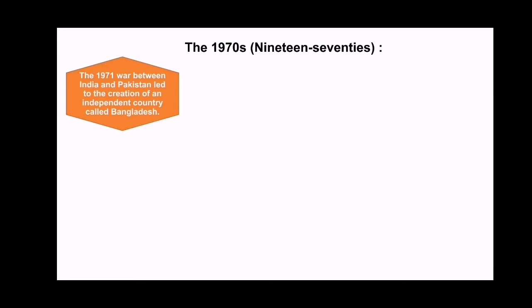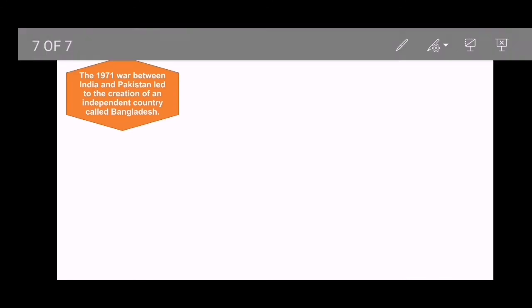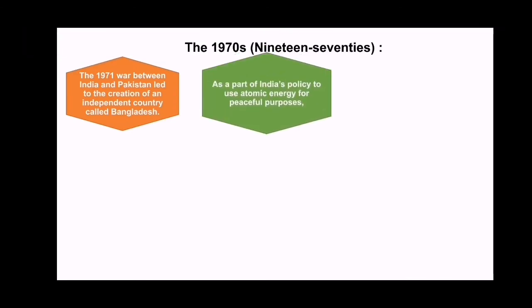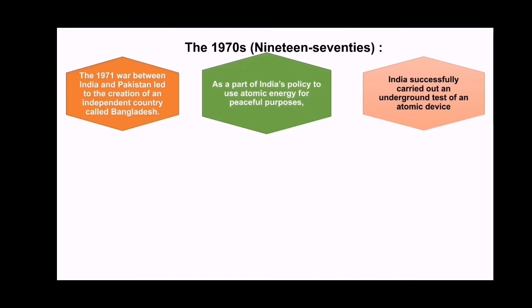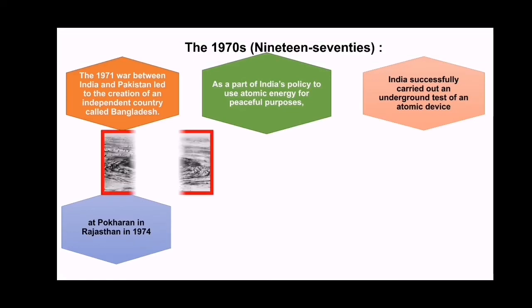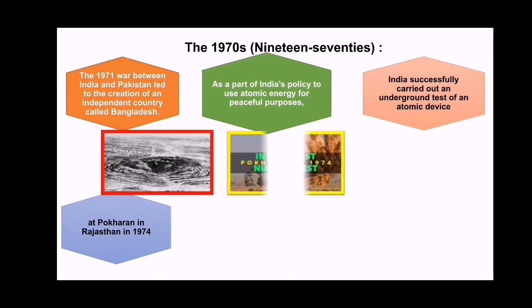The 1971 war between India and Pakistan led to the creation of an independent country called Bangladesh. As part of India's policy to use atomic energy for peaceful purposes, India began to move toward scientific research. India successfully carried out an underground test of an atomic device at Pokhran in 1974. As you can see in the picture, this was India's first nuclear test, conducted underground in 1974.